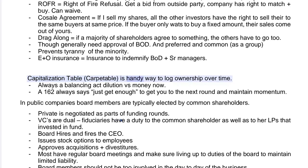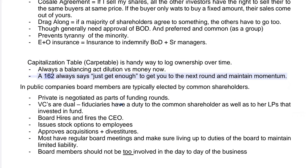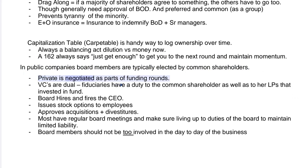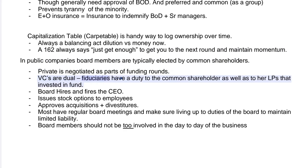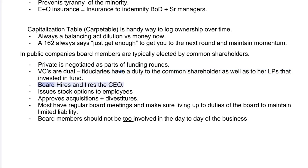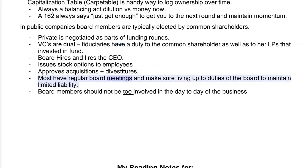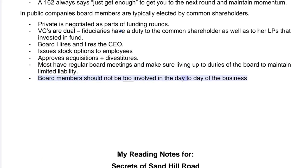D&O insurance indemnifies board members and senior managers. The capitalization table is a handy way to log ownership over time — it's always a balancing act between dilution and getting money now. The advice is to raise just enough to get you to the next round and maintain momentum. In public companies, board members are typically elected by common shareholders; in private companies, this is negotiated as part of funding rounds. VCs are dual fiduciaries — they have a duty to both common shareholders and their own LPs. The board hires and fires the CEO, issues stock options, and approves acquisitions and divestitures, while board members should not be too involved in day-to-day operations.